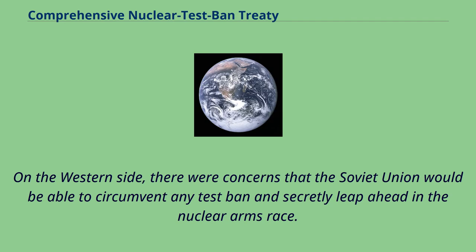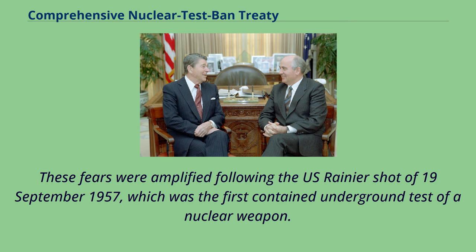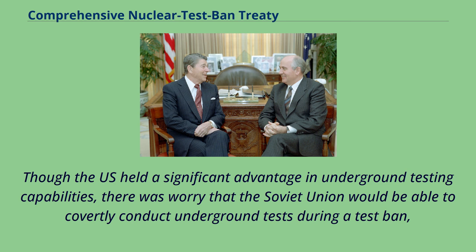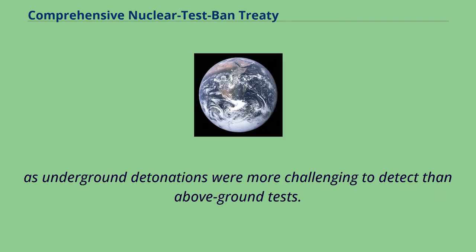On the western side, there were concerns that the Soviet Union would be able to circumvent any test ban and secretly leap ahead in the nuclear arms race. These fears were amplified following the U.S. Rainier shot of September 19, 1957, which was the first contained underground test of a nuclear weapon. Though the U.S. held a significant advantage in underground testing capabilities, there was worry that the Soviet Union would be able to covertly conduct underground tests during a test ban, as underground detonations were more challenging to detect than above-ground tests.